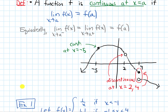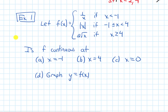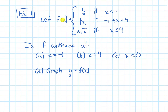Let's look at an example where we apply this definition of continuity. I have this piecewise function: it equals 1 over x if x is less than negative 1; absolute value of x if negative 1 is less than or equal to x is less than 4; and 2 root x if x is greater than or equal to 4. The problem asks: is f continuous at x equals negative 1, x equals 4, and x equals 0? And finally, we'll graph this piecewise function.